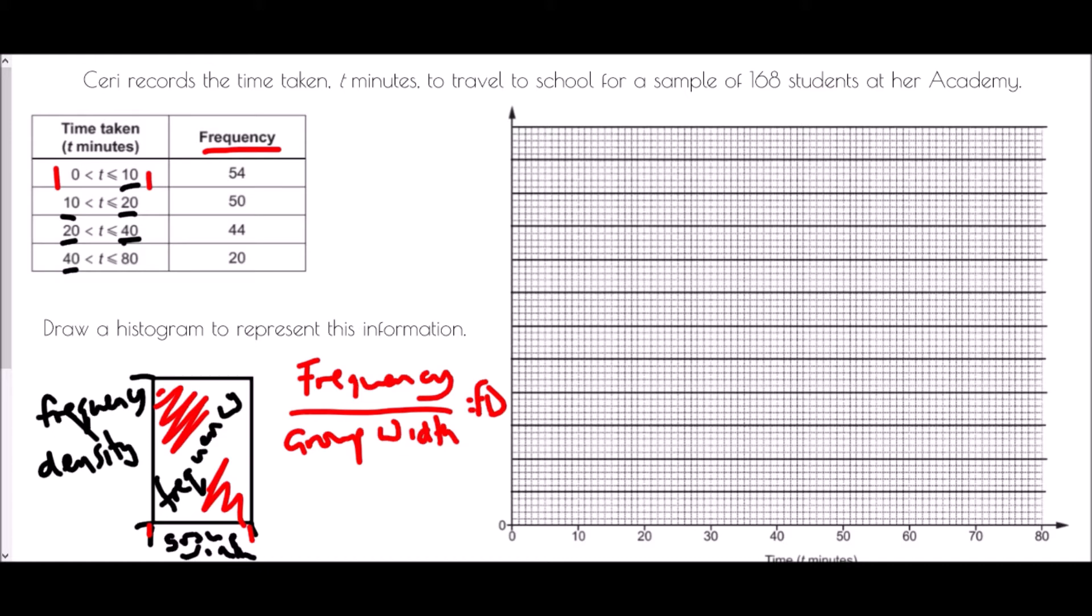So what we're actually going to need to do here is to extend this table. We're going to need the group width and the frequency density. In the first group it is from 0 to 10, so the group width is 10. The second group is 10 to 20, so that is also a width of 10. The next is 20 to 40, so we have different sized groups, which is important within a histogram, and we end up with a width of 20. The last one is 40 to 80, so that is a width of 40.